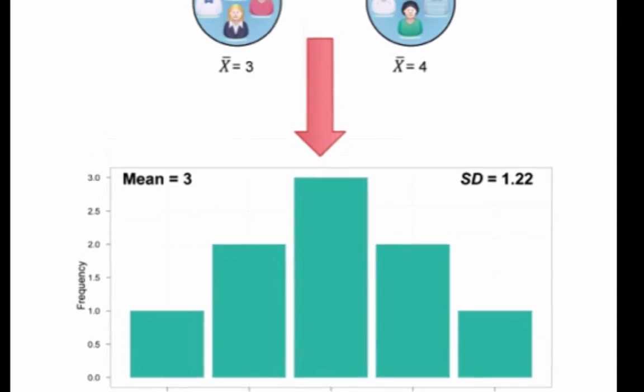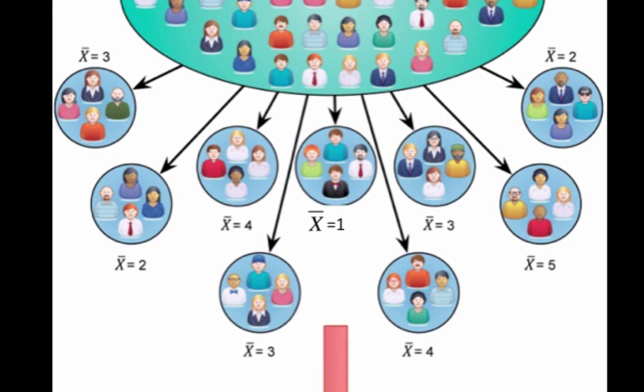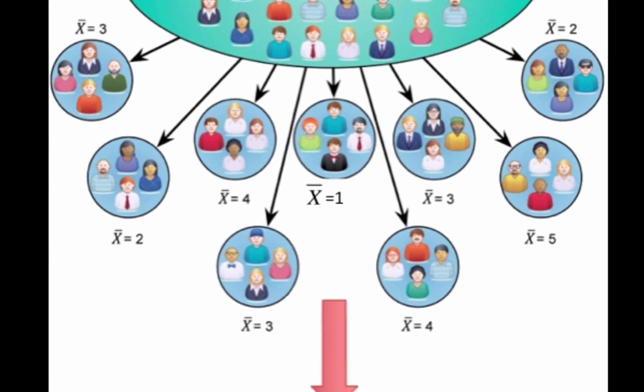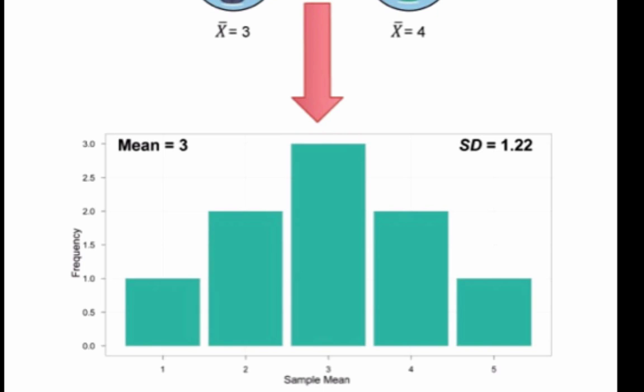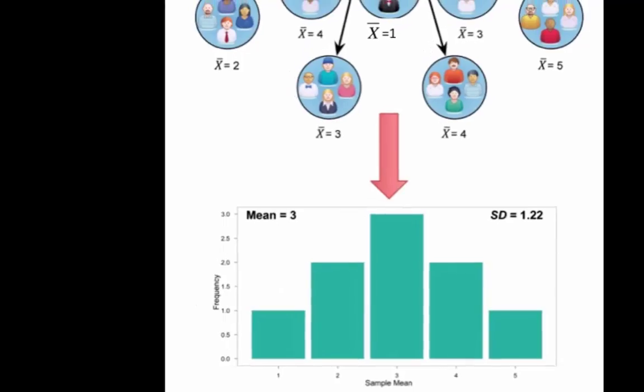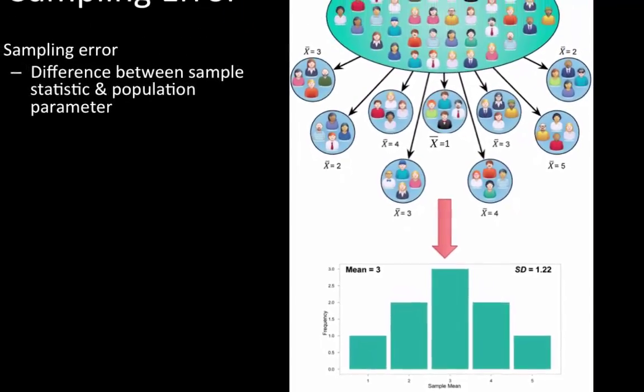Looking above, three of the nine samples had a sample mean of 3. But notice the standard deviation of 1.22. This is not of individuals within one sample—it's of the population, among the different samples we pulled from the entire population.